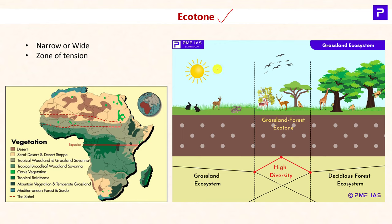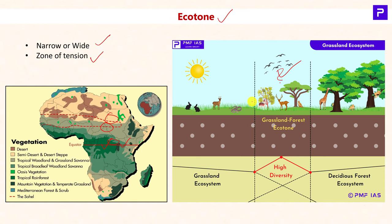Coming to the next concept: Ecotone. In the levels of organization there are various biomes and major ecosystems. The transition zone between two biomes or two major ecosystems is called an Ecotone. Since an Ecotone is a transition zone, it has the characteristics of both biomes. An Ecotone may be narrow or wide — for example, the Ecotone between tropical rainforest and savannah deciduous forest is quite narrow, whereas the Ecotone between tropical savannah and the Sahara desert is quite wide. The transition zone is called a zone of tension because organisms from either community come and interact there.